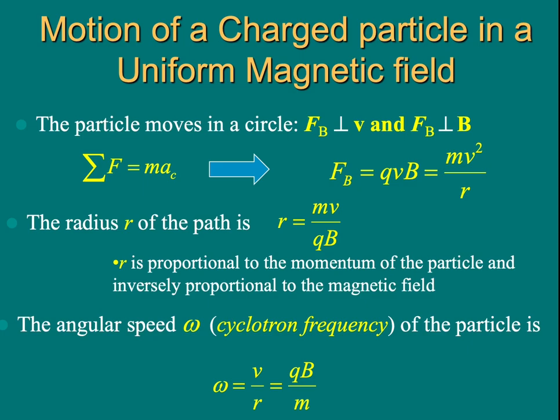Solving this equation, we can find the radius of the circular motion of the particle is proportional to the momentum of the particle, and inversely proportional to the magnetic field times the charge of the particle.